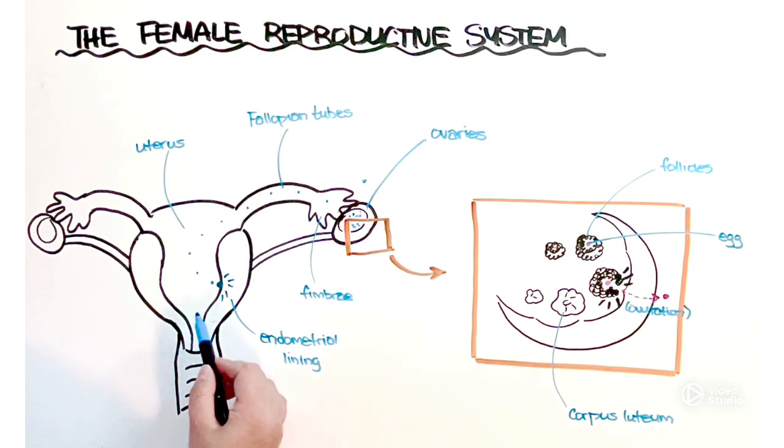This part of the uterus kind of towards the bottom here is referred to as the cervix and it's this really tough muscular band of tissue that for the most part stays closed. That's important during pregnancy because it's going to help keep the developing fetus in the uterus. It's also important during the last half of the menstrual cycle because that's going to help prevent another sperm cell from getting in and fertilizing another egg if it was to be ovulated.